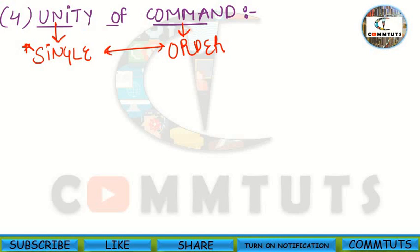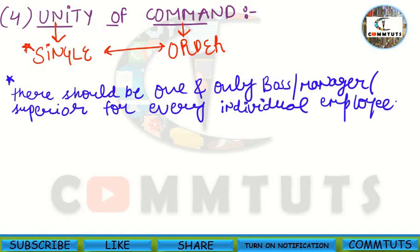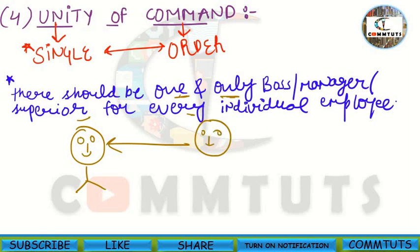Henry Fayol says there should be one and only one boss, manager, or superior for every individual employee in the organization. The employees or subordinates should only receive orders from one superior or manager, and the subordinates will be answerable to that superior.